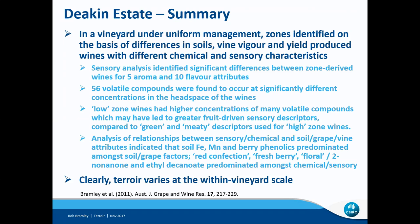We attempted to derive some relationships between the sensory and chemical attributes on one hand, and the soil, grapevine attributes on the other. There was some indication that soil iron, manganese and berry phenolics predominated amongst some soil and grape factors, and these tended to be associated with red confection and fresh berry sensory attributes. But the bottom line was that this study demonstrated very clearly that terroir was varying at the within-vineyard scale, and one would hope for further detailed studies to get on top of understanding the interaction between soil, grape and wine compositional attributes.